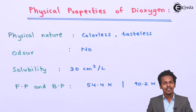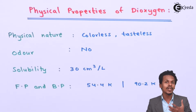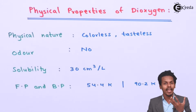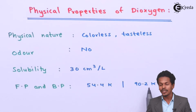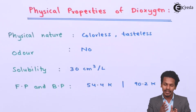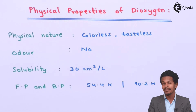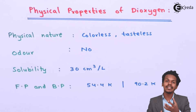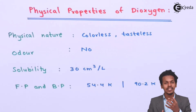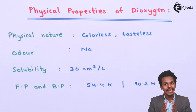We are talking about the freezing point and boiling point. Oxygen is basically a gaseous molecule, but it can be converted into a liquid form or solid form by applying higher pressure and by decreasing the temperature. The freezing point of dioxygen has been found to be 54.4 Kelvin, while the boiling point has been found to be 90.2 Kelvin. In the gaseous state it is colorless, but once we cool it and convert it into a liquid or solid form, the color changes to pale blue or light blue.